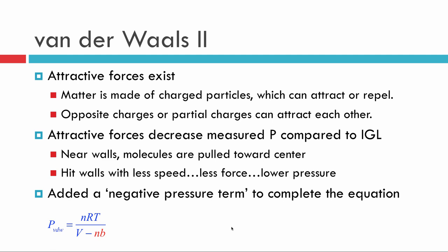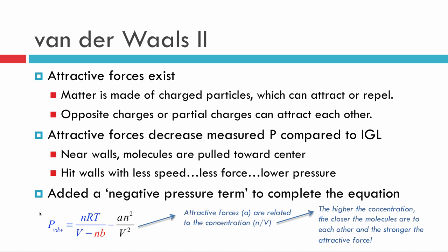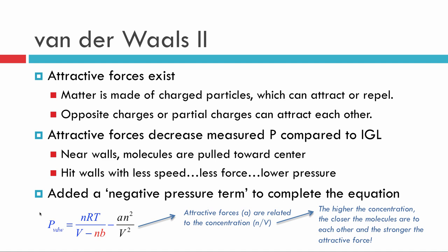So what van der Waals did was, he took the adjustment he had made before, okay, we can see that right here, and he subtracted away another term. And this little a term is an attractive force term, and it's related to the concentration. So n over v, moles per liter is concentration, that should make sense. Because if you think about it, the more concentrated the system is, the closer the molecules are to each other, and the stronger the attractive forces are going to be.